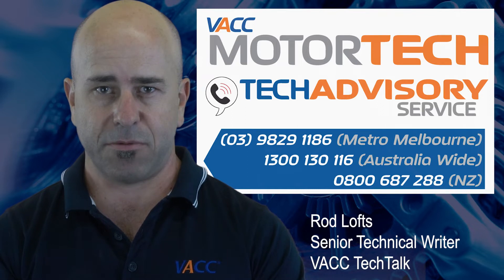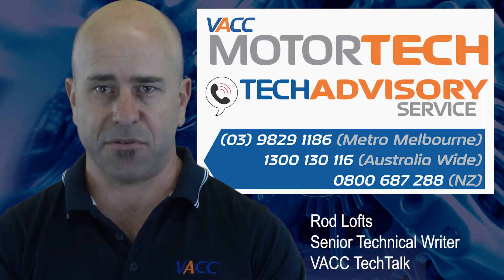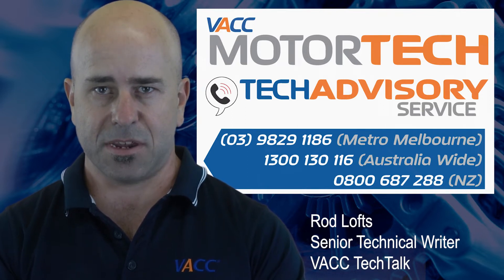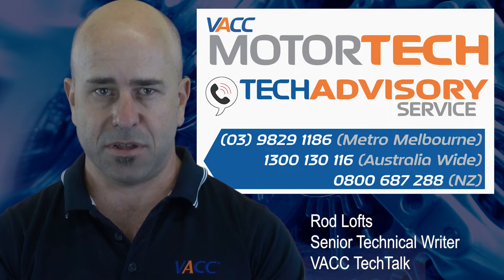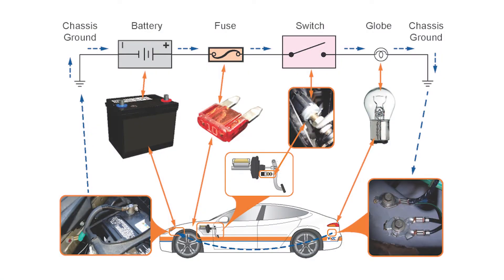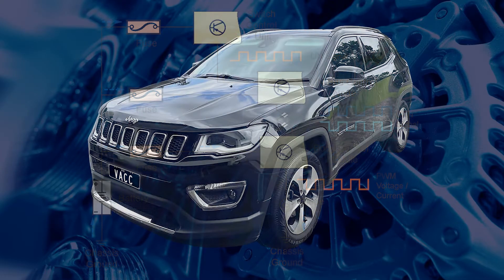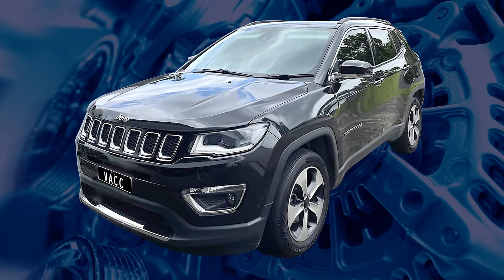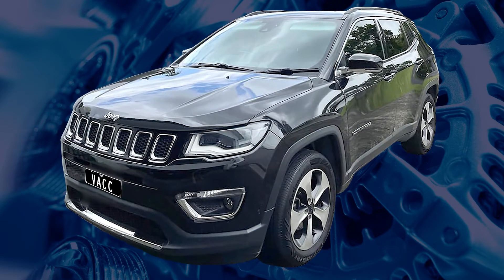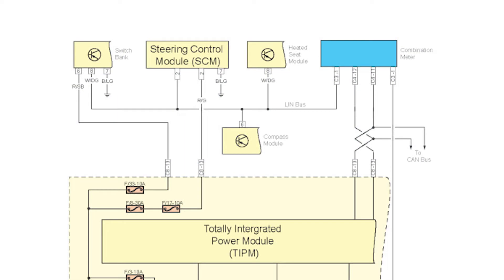Once these diagrams are sent out, we regularly get another request asking for a description of operation, as these circuits are more complicated than the earlier systems. Lighting systems used to be relatively simple, with power via a fuse to a switch which in turn might activate a relay which would supply power to a light. Now many vehicles use data signals from a switch unit to a body control module which supplies a pulse width modulated voltage or current to a light. This is how most Dodge, Jeep and Chrysler vehicles operate from 2008 onwards, making the wiring diagrams difficult to interpret.